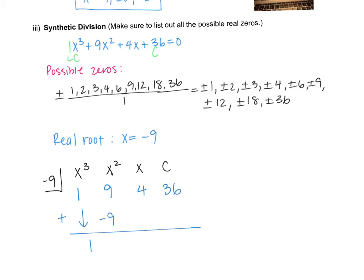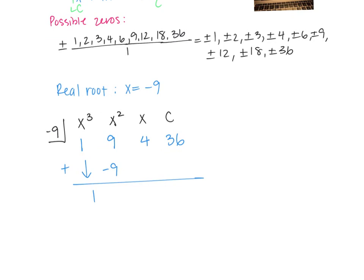And then start using synthetic division. So from here, I'm just not going to explain this part because it's a little bit redundant. We've done synthetic division multiple times now. So this becomes 4. 4 times negative 9 is negative 36. So my remainder is 0. So this is my constant, my x, and my x squared.